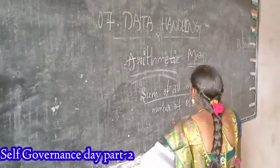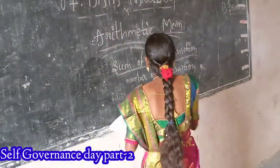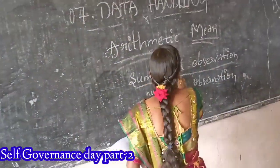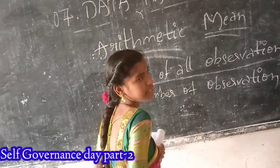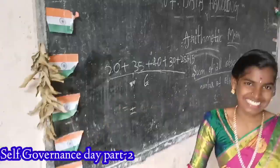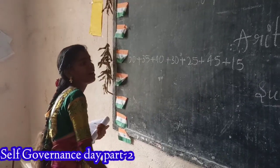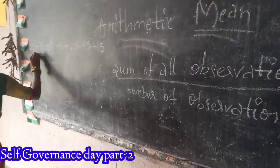Arithmetic mean formula is the energy sum of all observations by number of observations. Sum of all observations by number of observations.